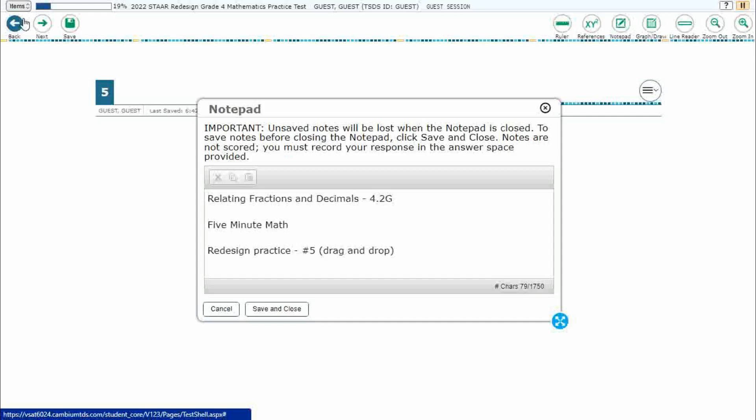Hello and welcome to 5-Minute Math. Today we are looking at the fourth grade concept of relating fractions and decimals. This is standard 4.2g in the great state of Texas and we are using item number five, which is a new item type drag-and-drop off the redesigned practice online STAAR test.